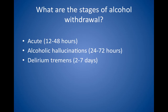Delirium tremens presents 2-7 days after the last drink and possibly longer. It presents with hallucinations and illusions, confusion, poor sleep, and autonomic lability such as sweating, increased pulse, and increased temperature. Fatality is usually associated with this stage. These stages may overlap. The classic example is a patient who develops delirium on postoperative day 2 but was fine before surgery — he or she could be a closet alcoholic, assuming other causes for delirium have been ruled out.